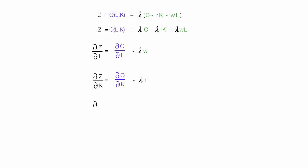Now I take the partial derivative of Z with respect to lambda. The first part of the equation has no lambda term, so it contributes nothing. In the second part, everything has a lambda, so I have C minus RK minus WL.